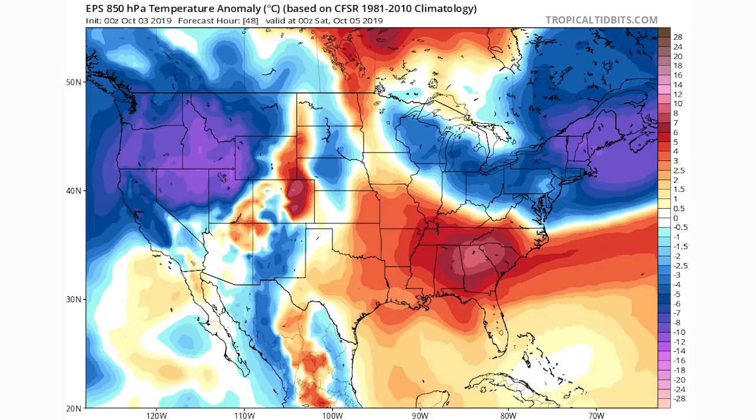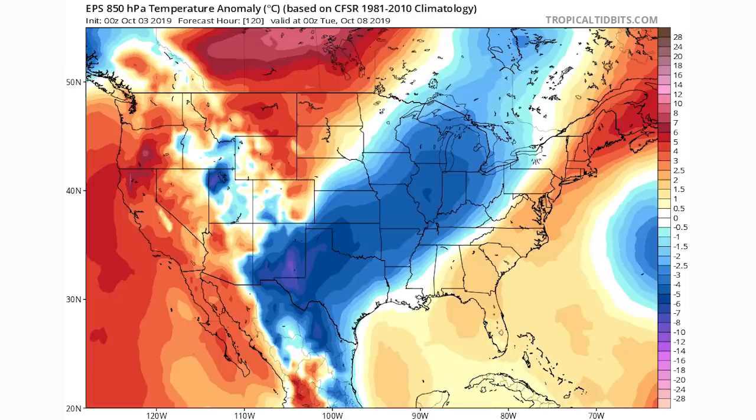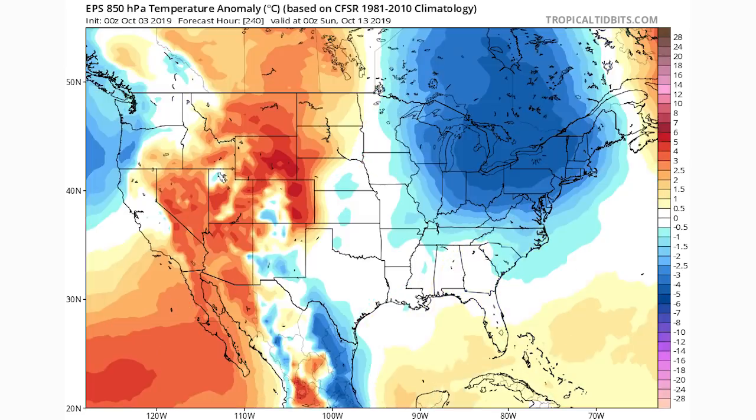The European ensemble model also confirms these cool downs — the 5th cool down for the northeast and northwest, the 8th cool down approaching the central and eastern US, and the 13th cool down as well. The GFS and European model are in pretty good agreement with each other on this pattern.